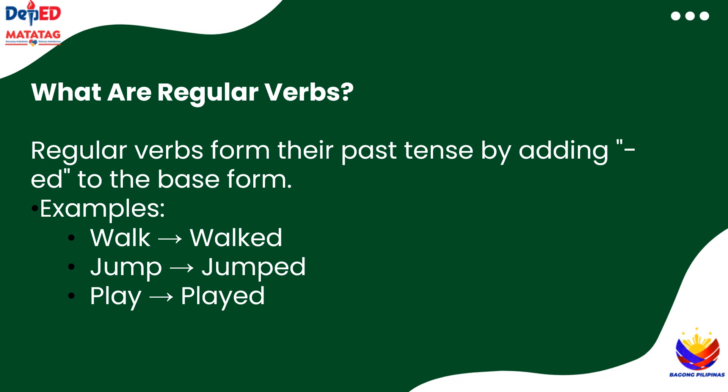Regular verbs are verbs that follow a simple pattern when we talk about actions in the past. They form their past tense by adding -ed to the base form of the verb. For example, the verb walk becomes walked, jump becomes jumped, and play becomes played. This rule makes it easy to remember how to form the past tense of regular verbs.